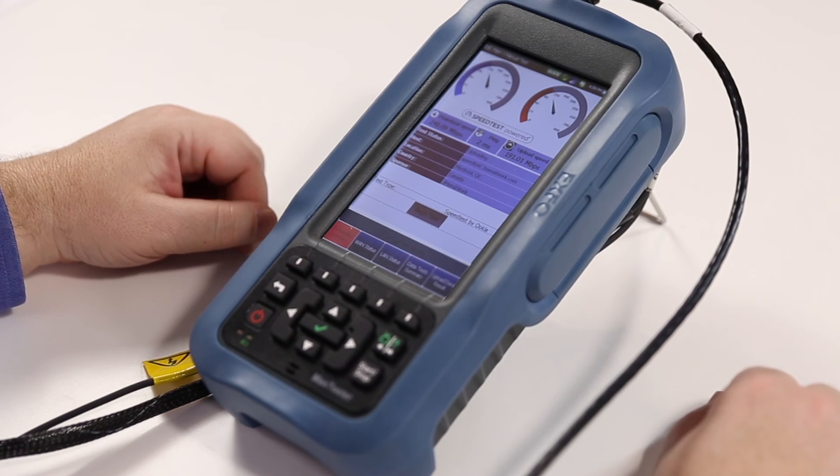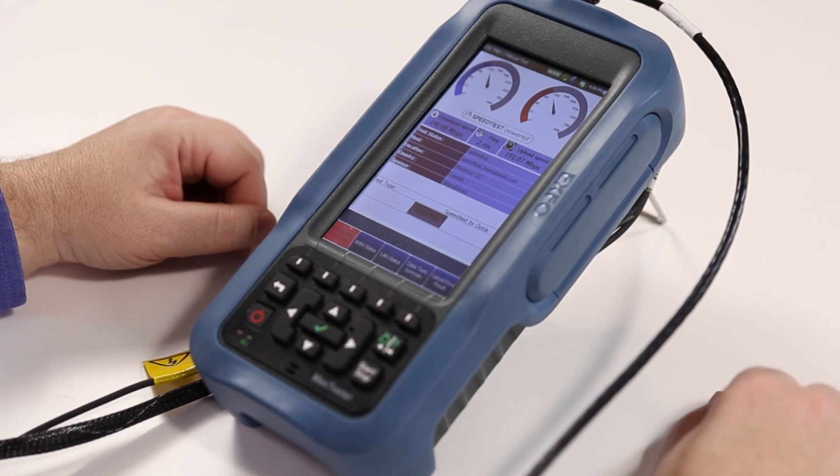That concludes the demo of the Ookla speed test powered solution on the Mac 635G. Thank you.